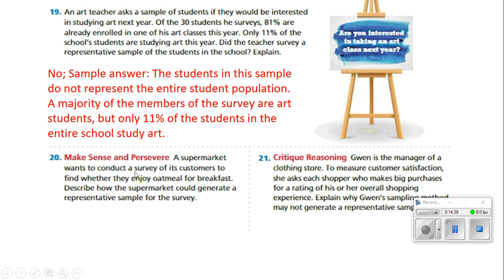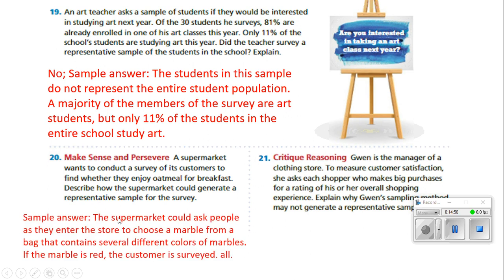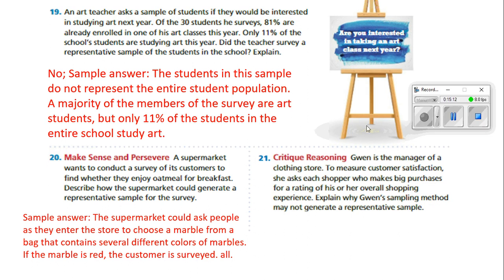Number 20. A supermarket wants to conduct a survey of its customers to find out whether they enjoy oatmeal for breakfast. Describe how the supermarket could generate a representative sample. The supermarket could ask people as they enter the store to choose a marble from a bag containing several different colors. If the marble is red, the customer would get surveyed; if not, they wouldn't. That's a random sample — we have no idea who's going to pick the red marble, or they could even flip a coin and if it came up heads they'd get surveyed.